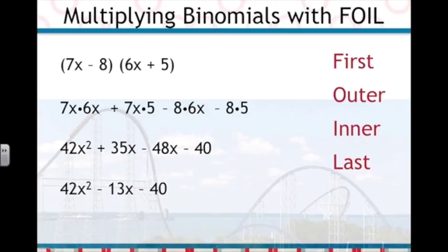So our final answer is 42x squared minus 13x minus 40. Don't forget that FOIL only works when we have two binomials. But the principle of distribution is the same, no matter what polynomials we have.